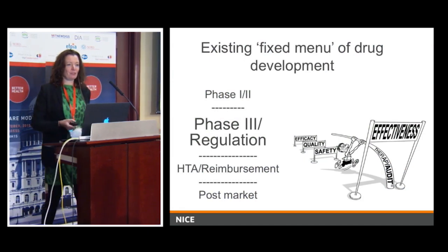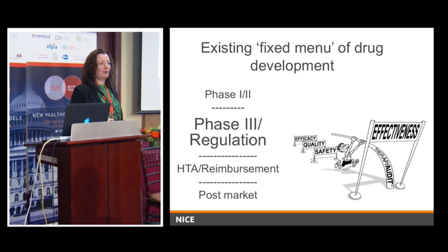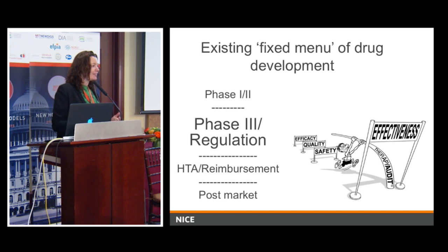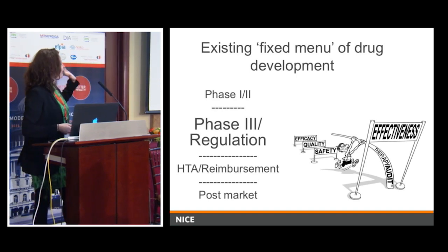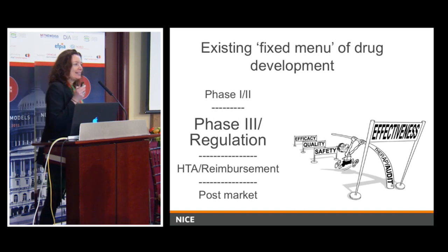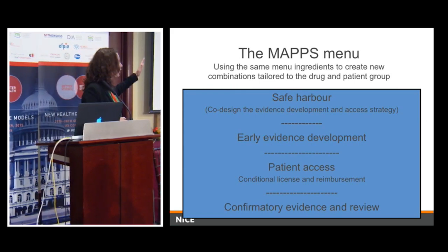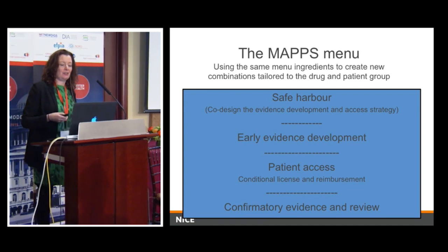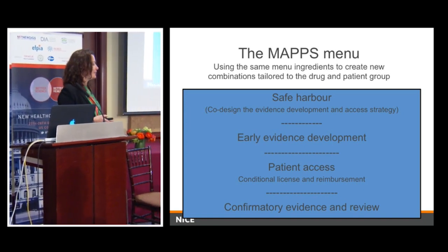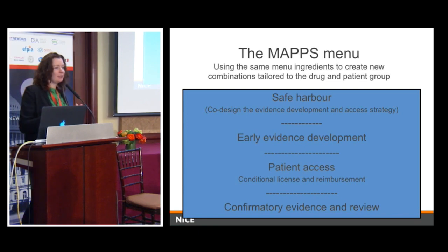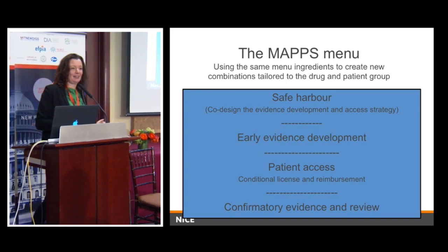This is the standard fixed menu of drug development we've been using — like a fixed price menu in a restaurant. It kind of works for 80% of people, but there are always vegetarians, people who arrive late, people who are allergic to shellfish. What we're doing with MAPS is taking those very standard fixed-menu ingredients and recombining them. We start with a safe harbour where we get agreement between stakeholders, then early evidence development with larger phase two studies and supplementary data. The main piece is patient access with conditional licence and reimbursement agreements, and this confirmatory evidence — where the real-world data bit comes in — is really important.